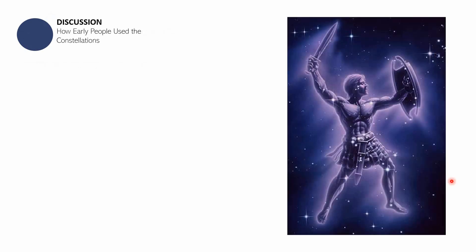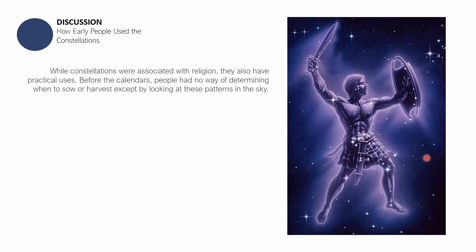For the second part of this session, we have a discussion about how early people used the constellations. What you see here is an artist's impression of Orion. While constellations were usually associated with religion, they also have practical uses aside from religion. Before the calendars existed, people had no way of determining when to sow or harvest except by looking at these patterns in the sky.